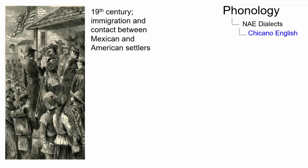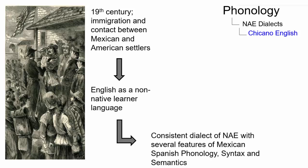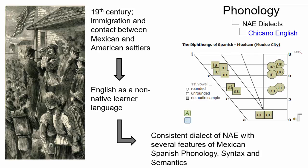As contact and immigration increased between Mexican and American settlers in the 19th century, English became a common non-native learner language for the Mexican immigrants. Over time, this learner language developed into a consistent dialect that maintained several features of Mexican-Spanish phonology, syntax, and semantics.